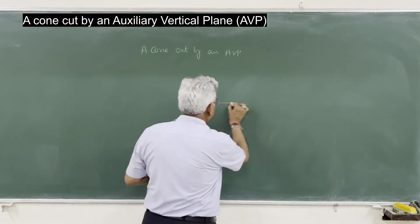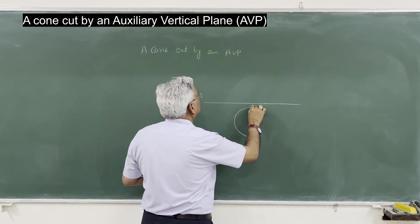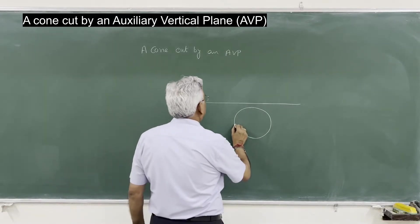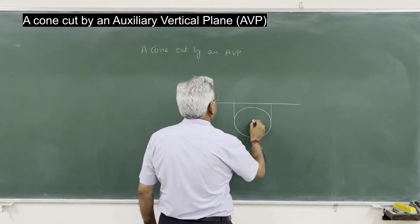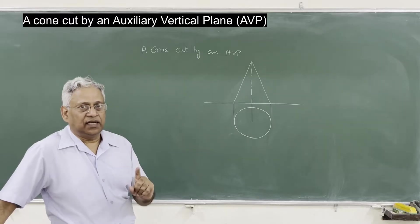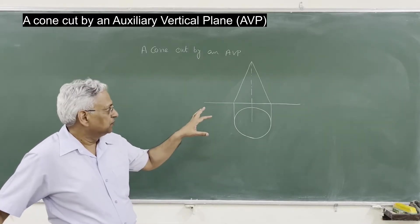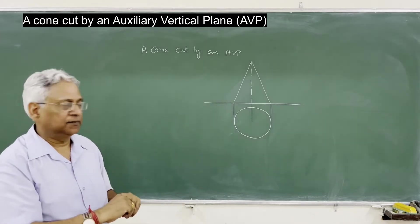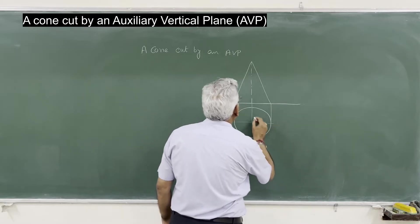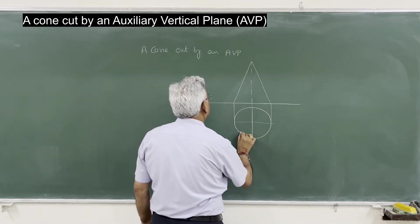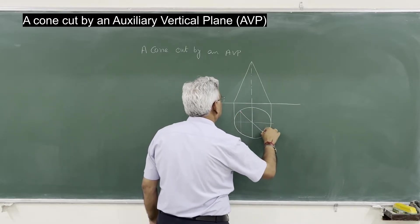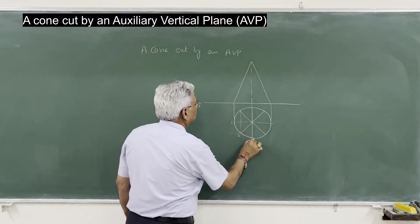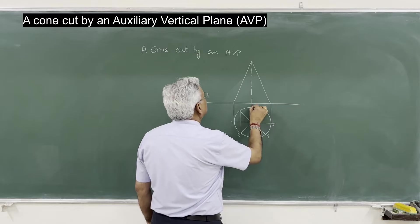When you place a cone, you will see a circle in the plan and a triangle in the elevation. As I mentioned in earlier sessions, whenever you have a conic section like a cylinder or a cone, it is always advisable to divide the base into 8 or 10 equal parts. Let us divide this into 8 parts: 1, 2, 3, 4, 5, 6, 7, and 8.